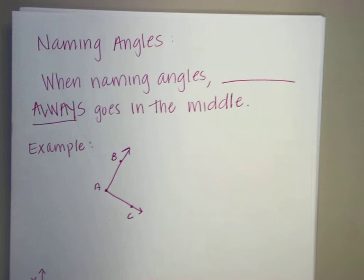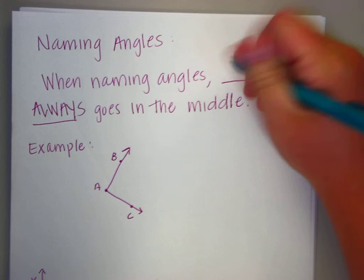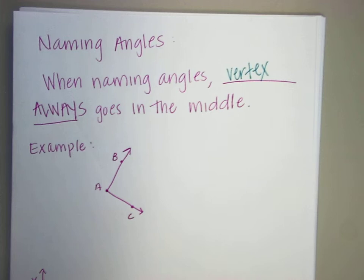All right, this is something I forgot to talk about in the first one. So when you're naming angles, the vertex always goes in the middle.